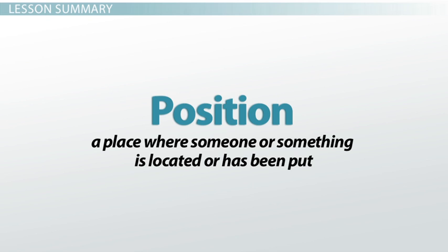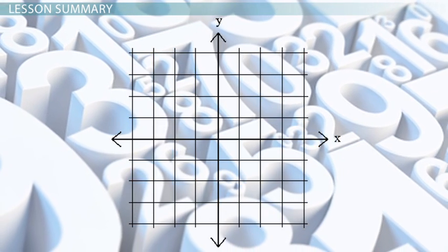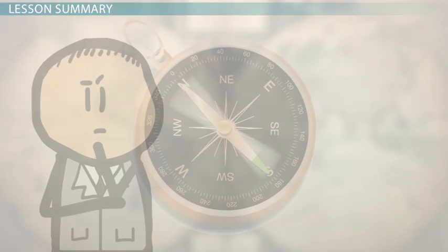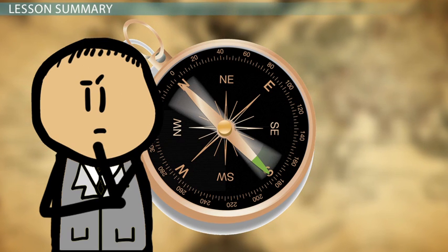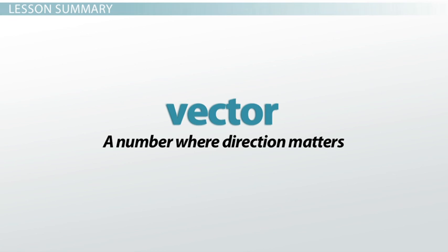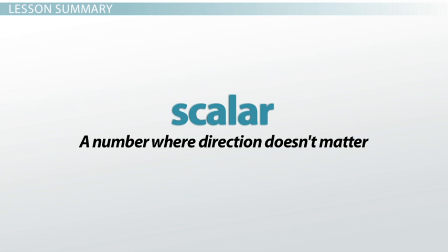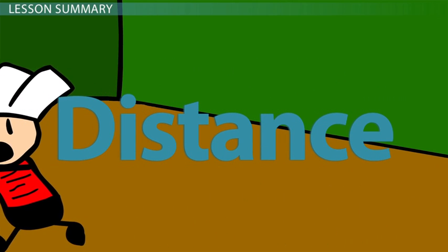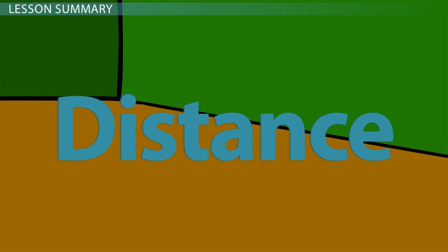To recap: position is a place where someone or something is located. In physics, position is usually a number on an axis. You might be at positive 6 meters in the x-direction and negative 3 meters in the y-direction — that is your position. Direction is important for position, making it a vector. A scalar is a number where direction doesn't matter. Position is a vector because direction matters, but distance is a scalar — distance is simply how far you've traveled, regardless of direction.